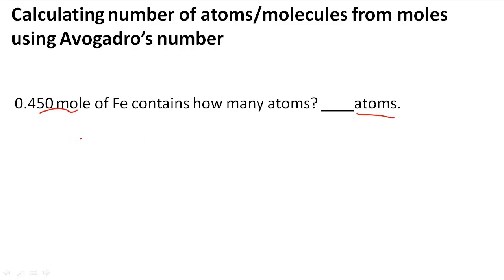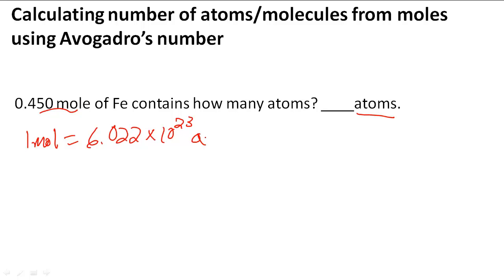What we have to do is use Avogadro's number. We know that one mole equals 6.022 times 10 to the 23rd atoms or molecules. But since we're talking about atoms here — Fe atoms — we're just going to put atoms. And this is Avogadro's number.